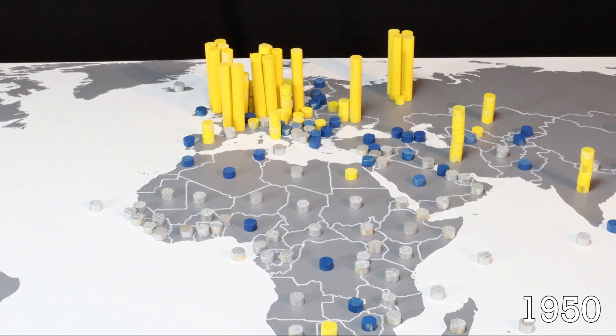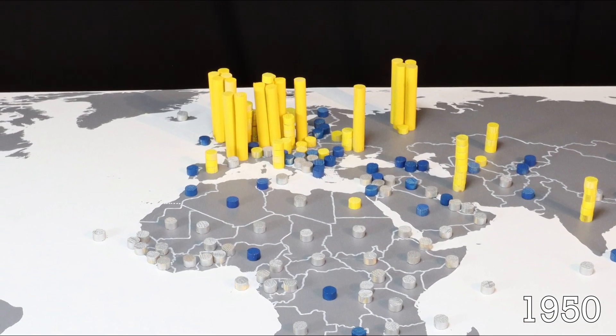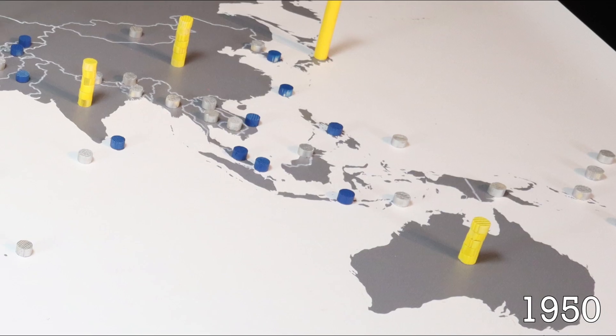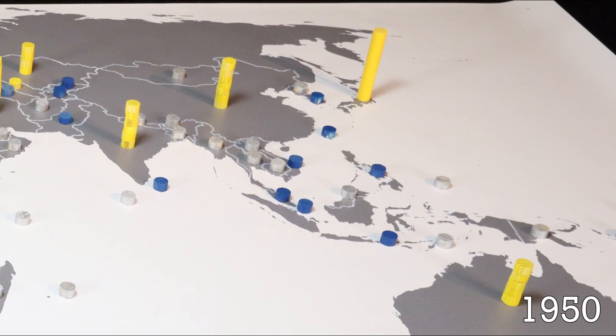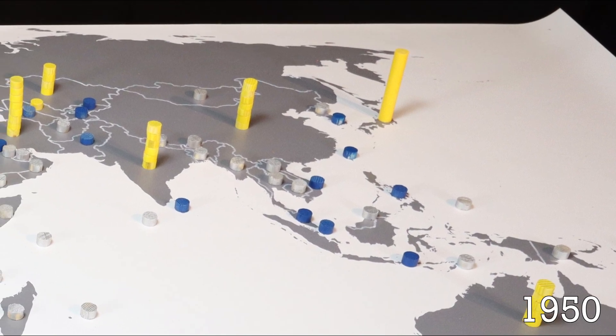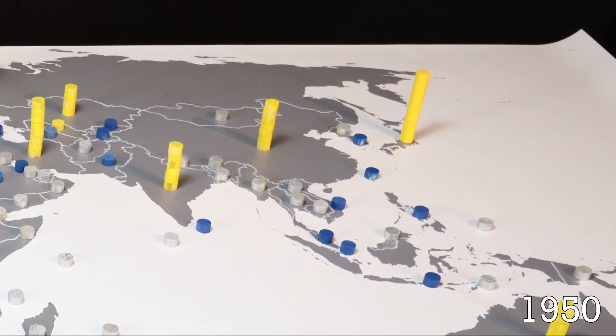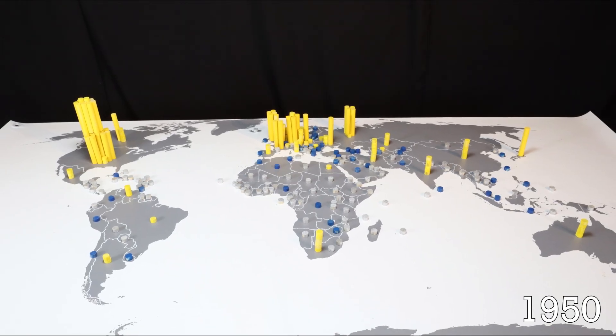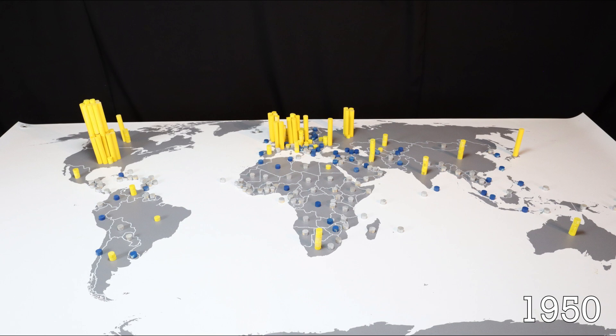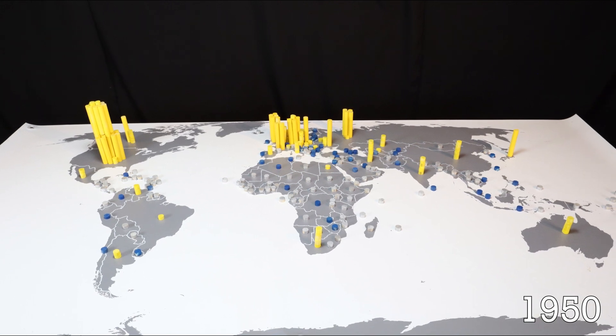On this map, emissions are visualized according to current-day geographical borders and divisions. So the emissions of, for example, the Soviet Union are distributed to the individual, now sovereign, republics within it.